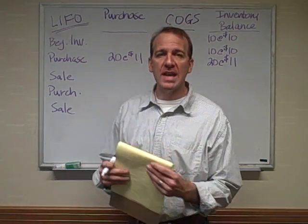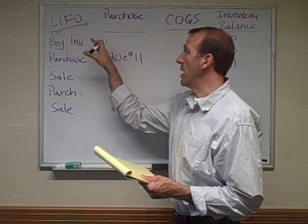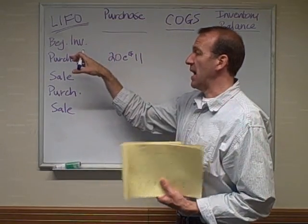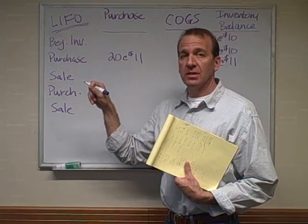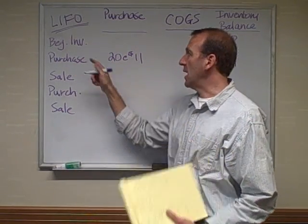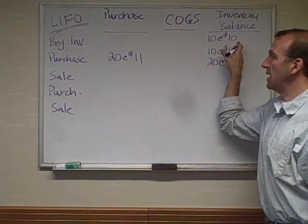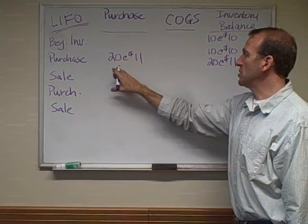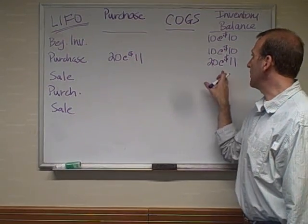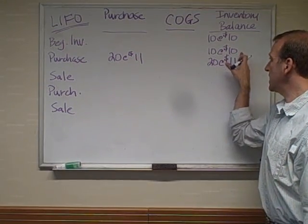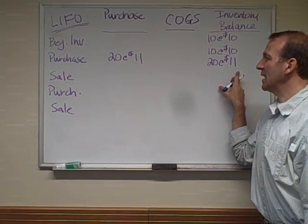Let's continue on with the LIFO method. The LIFO method stands for last in, first out. We have beginning inventory: 10 at $10, then we purchase 20 at $11. So we've got 10 at $10 and 20 at $11.